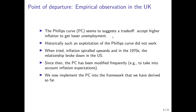Superficially, the Phillips curve suggests a trade-off for economic policy, so they could just accept higher inflation to get lower unemployment. And historically, this was actually tried — governments tried to exploit the Phillips curve relationship — but it didn't work out. When tried, inflation actually spiraled upwards in the 1970s in particular, and it spiraled out of control.